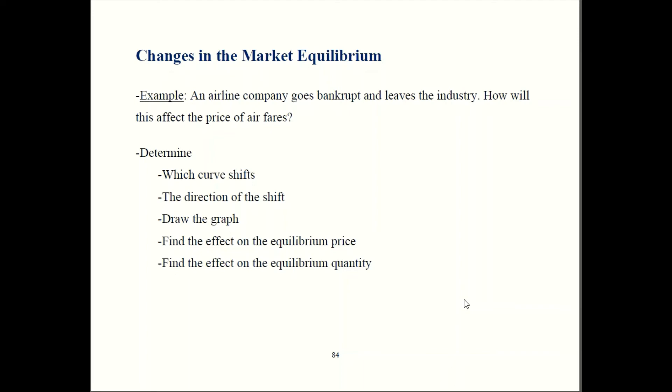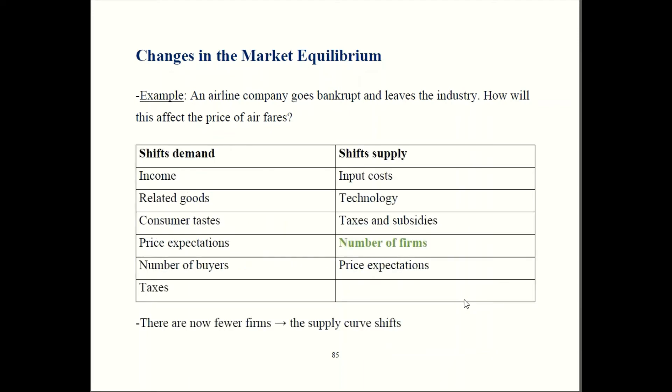Let's go over the answer. Which curve shifts? Go to your list of factors. Airlines are supplying transportation, so they're on the supply side. If one company goes bankrupt, that means there are now fewer firms in this industry. That's 'number of firms,' and number of firms shifts supply. So now we know which curve is shifting.